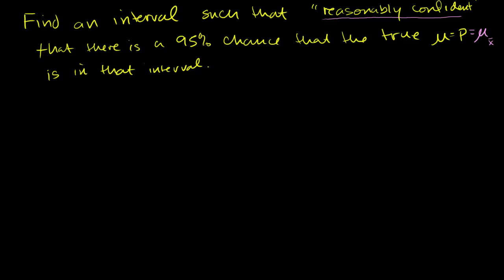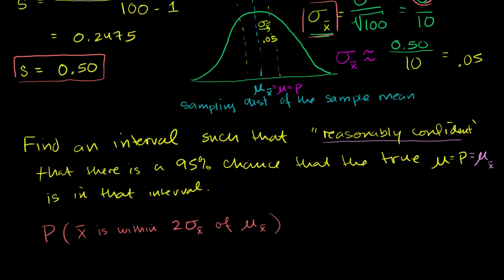What is the probability that if I take a sample and compute its mean, that sample mean is within two standard deviations of the mean of the sampling distribution? Let's look at the actual distribution. This is our sampling distribution; this is our sampling mean. A random sample mean is a sample from this distribution, so we're asking: what is the probability of finding a sample within two standard deviations of the mean? That's one standard deviation, and that's another standard deviation.